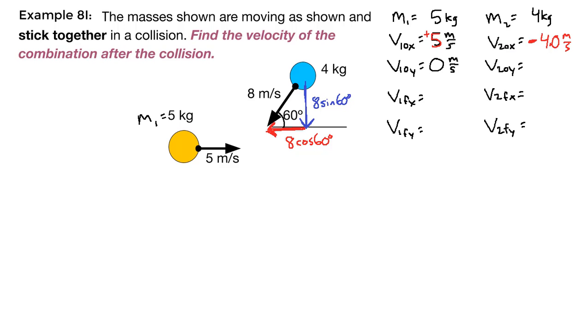And the y component, 8 sine 60 degrees, is 6.93 meters per second, and it's pointing downwards, which is our kind of standard default negative direction.